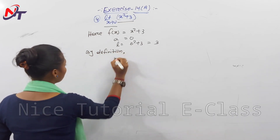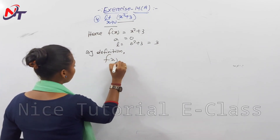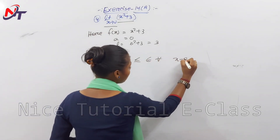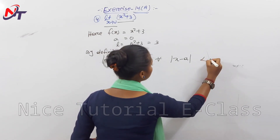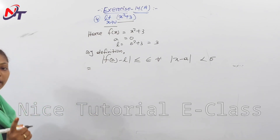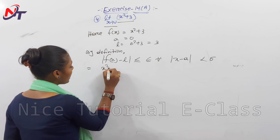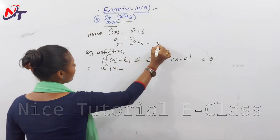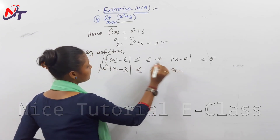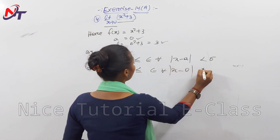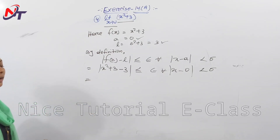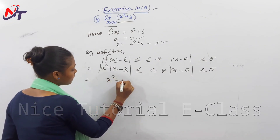By the limit definition, f of x minus L mod less than or equal to epsilon for all x minus a mod less than delta. Putting in the values: mod of x squared plus 3 minus 3 less than or equal to epsilon for all x minus 0 mod less than delta. That gives us mod of x squared, which equals mod of x squared minus 0.